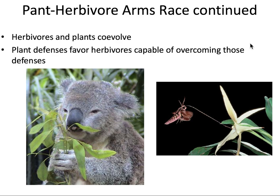Here is an example of co-evolution between herbivores and plants. The koala eats eucalyptus, which has toxic chemicals in it, but the koala has evolved to tolerate those and get nutrition from it. On the right-hand side, you see the Morgan sphinx moth — that long thing is actually its tongue. The reason it has such a long tongue is to reach the pollen at the bottom of a very long tube inside Darwin's orchid. As the orchid evolved to have a deeper shape, the moth evolved to have a longer and longer tongue to access the pollen. Herbivore and plant have co-evolved with each other over time.